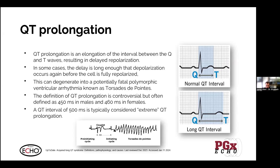The definition of what constitutes QT prolongation is a little controversial, with different definitions of what 'too long' means. The commonly cited definition is 450 milliseconds in males and 460 milliseconds in females. However, there is pretty good agreement that a QT interval of around 500 milliseconds is considered extreme QT prolongation, where we're really getting into a greater degree of risk for torsade de pointes.